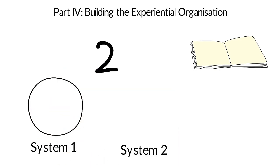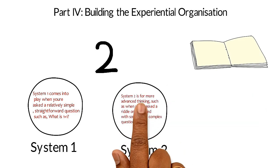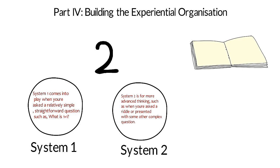System one comes into play when you're asked a relatively simple, straightforward question, such as what is one plus one. System two is far more advanced thinking, such as when you're asked a riddle or presented with some other complex question.